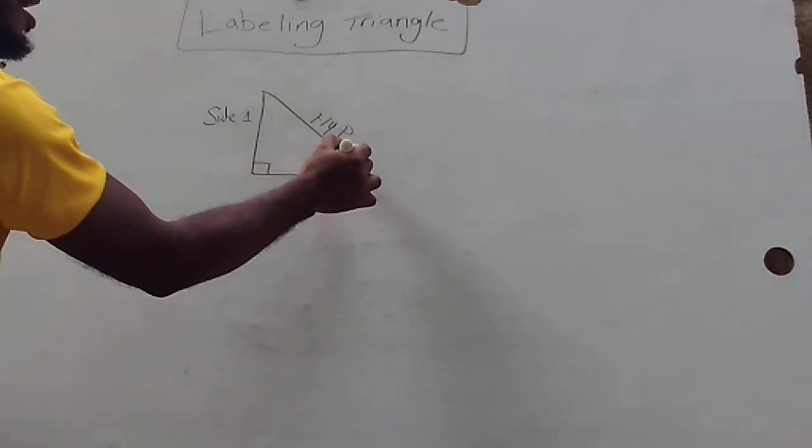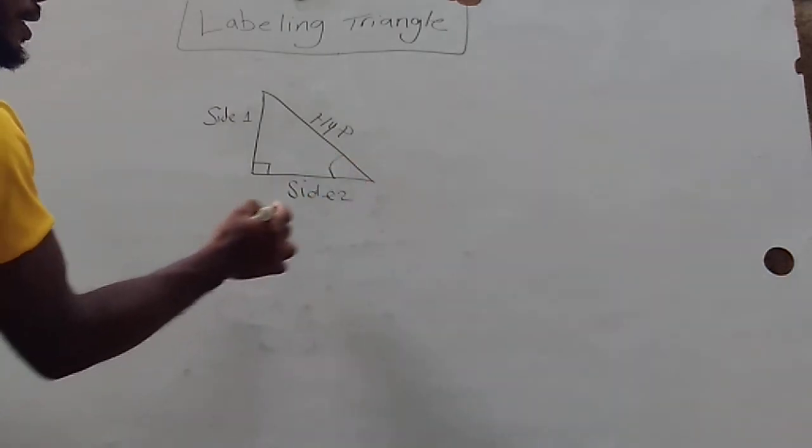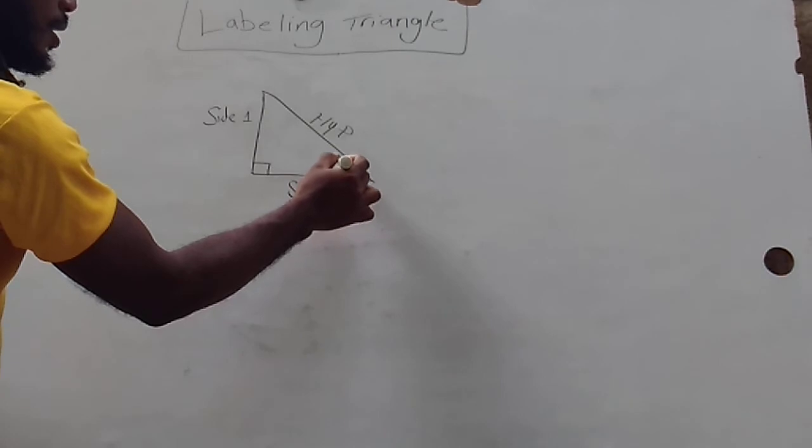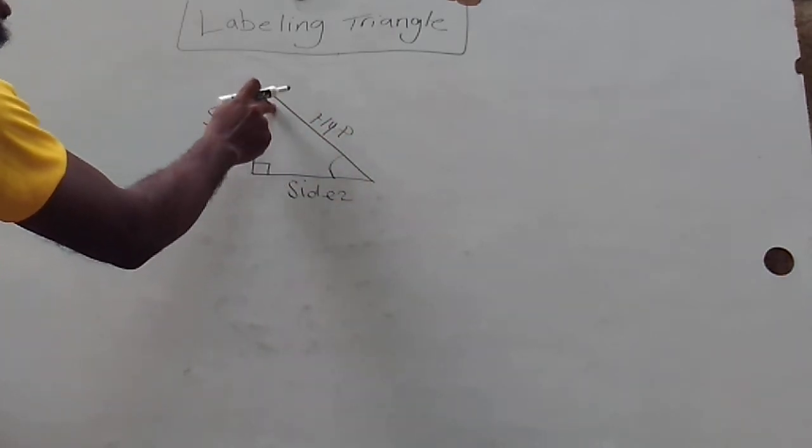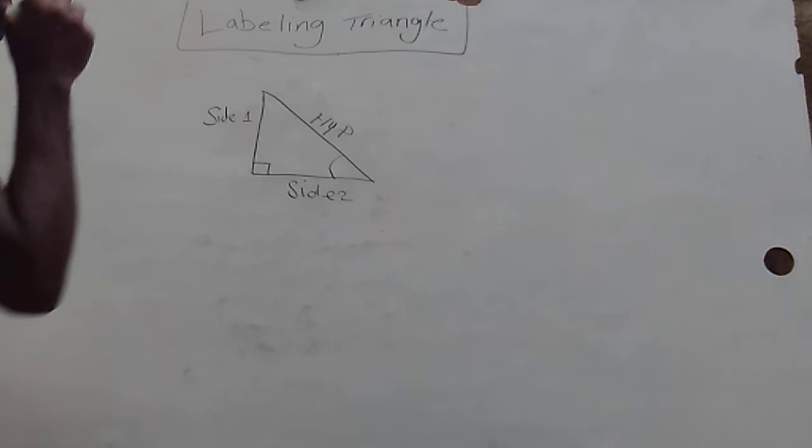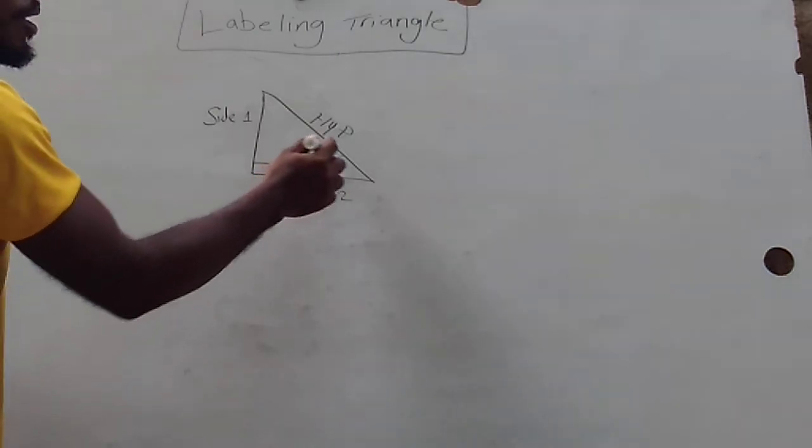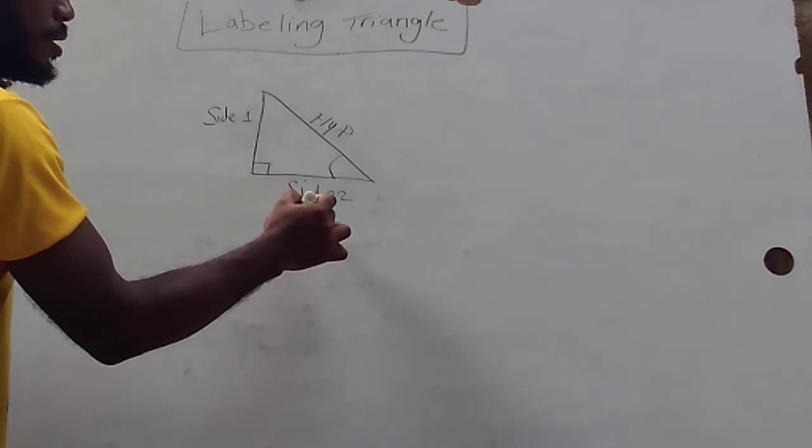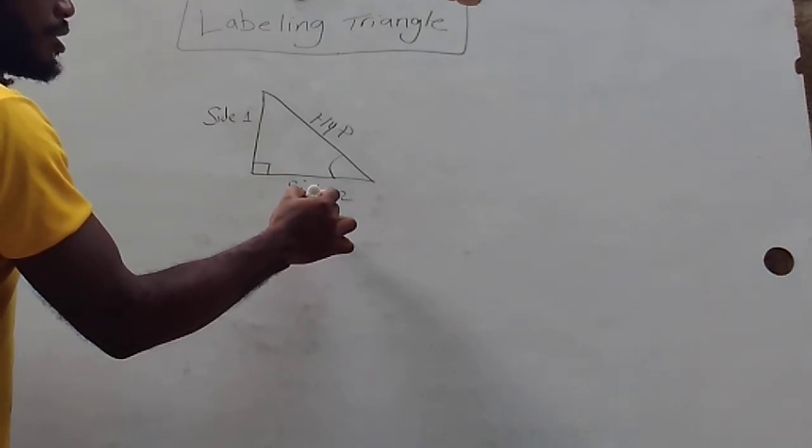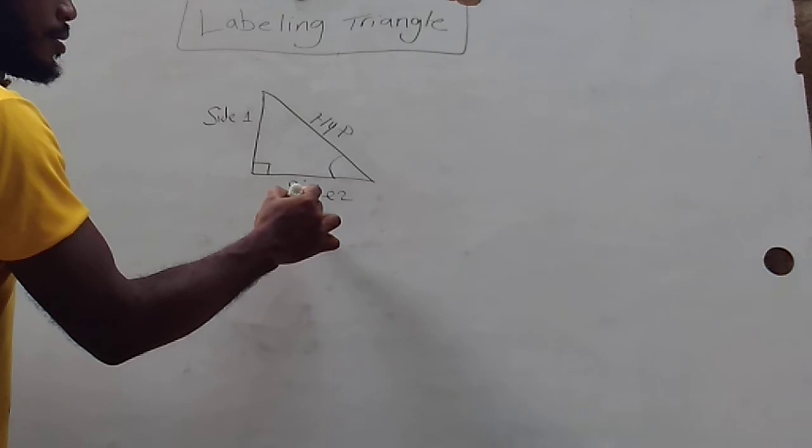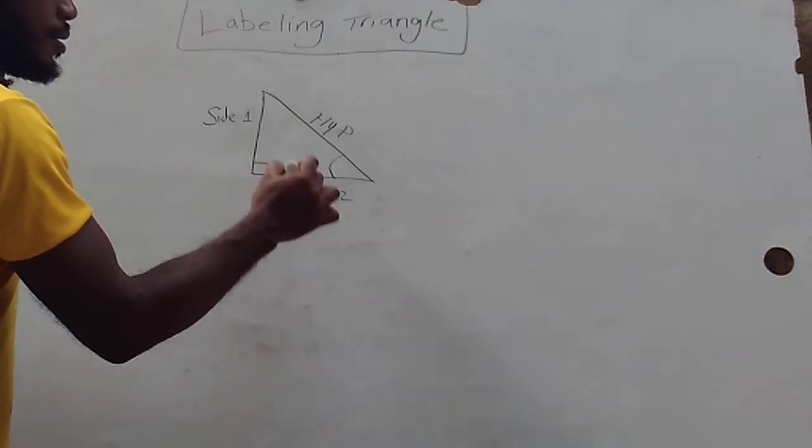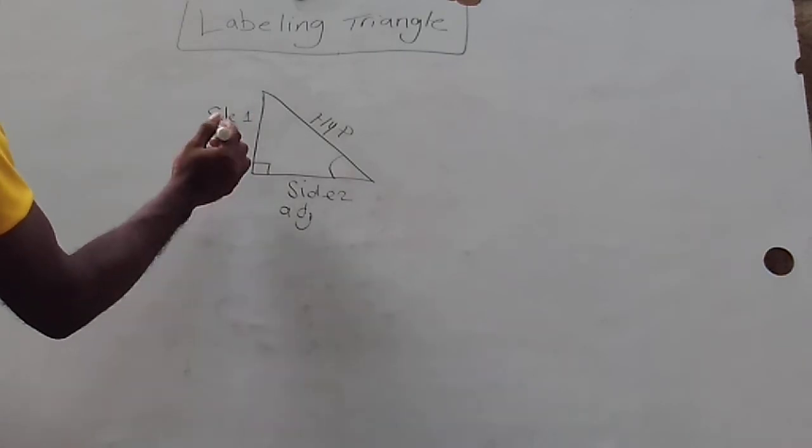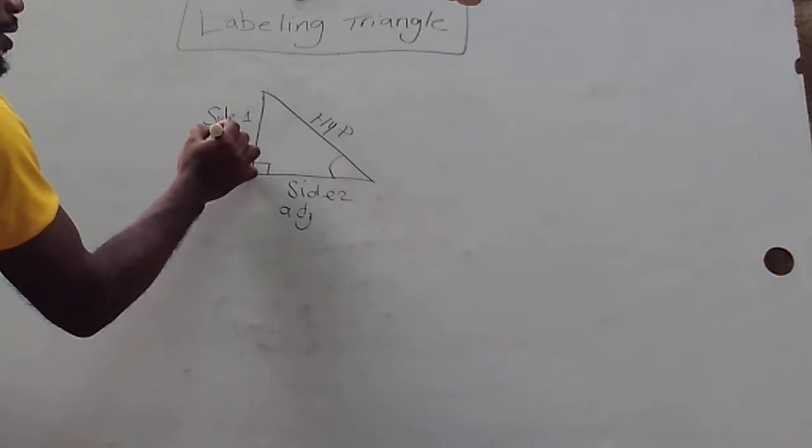If we have an angle right here, we could label this as adjacent because it's beside the angle. If this angle is not here yet we are given this angle, this would be adjacent because it's beside the angle, and this would be opposite because it's across from the angle.